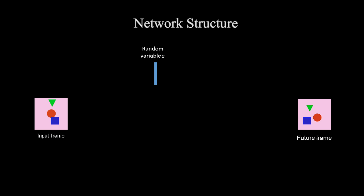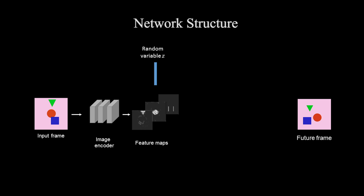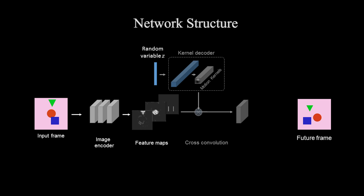The network structure is based on a novel cross-convolutional layer. Given an input frame, the network first decomposes the image into several layers. Then each layer is convolved with an image-dependent motion kernel through a cross-convolutional layer. These motion kernels are decoded from the random variable z. This process generates the motion for each image layer. Finally, all the layers are combined together to generate a next-frame image.